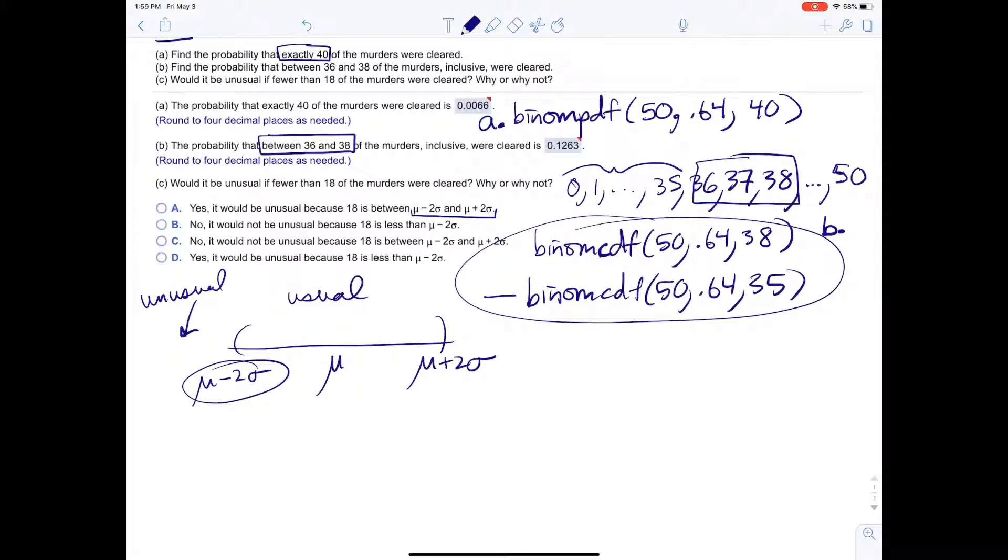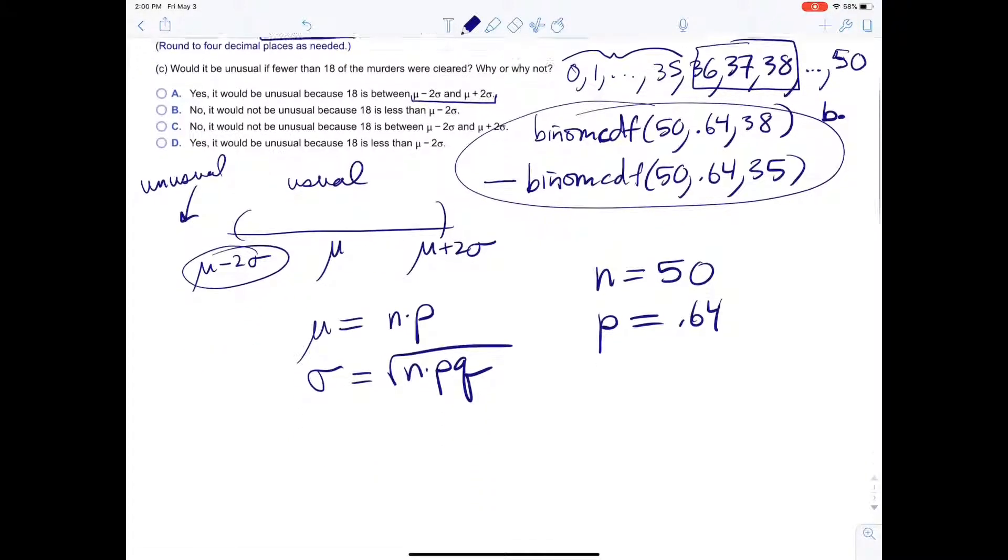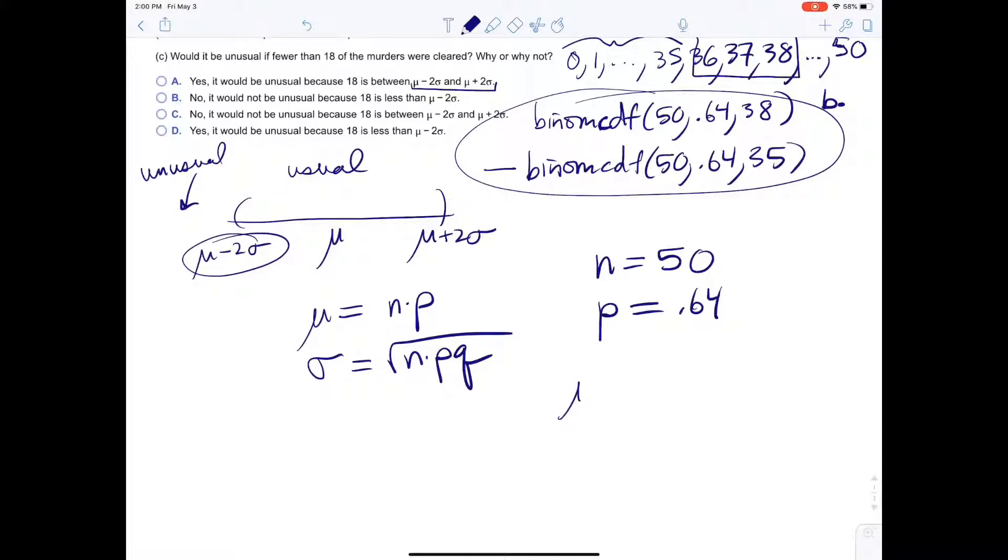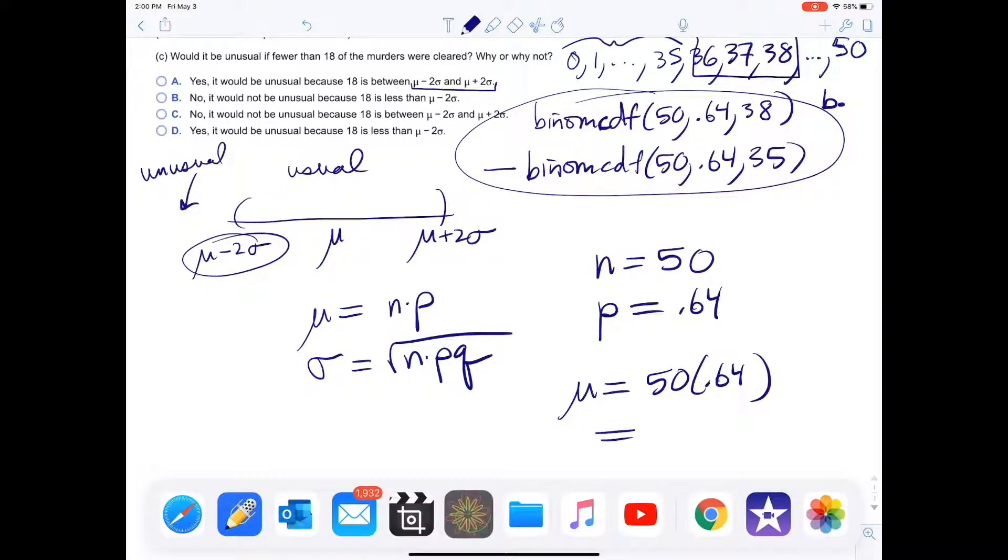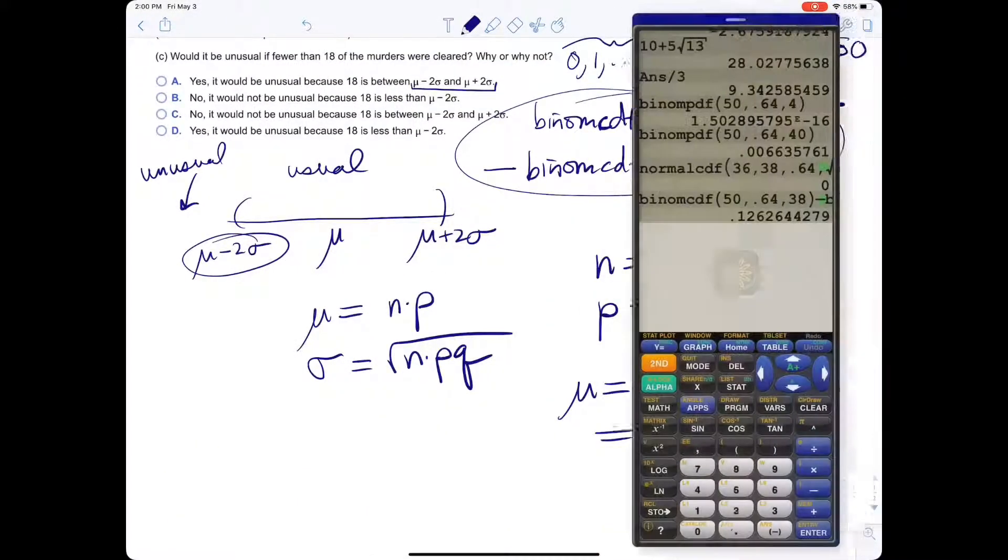So we have to find mu minus 2 sigma. For a binomial situation, mu equals n times P, and sigma equals square root of n PQ. So what is n? n is 50. P is 0.64. So the mean is 50 times 0.64, which is 32.